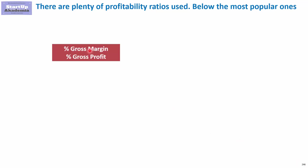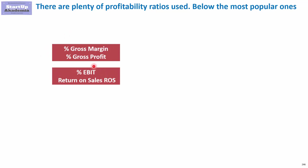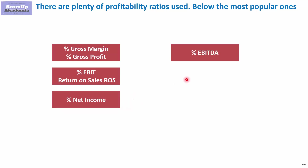The most popular is obviously the gross profit margin, which shows you how profitable you are after you deduct the cost of goods sold. Then we have a slightly more advanced level — the operational profit. This is usually called either percentage EBIT or return on sales. We can also have the net income expressed as a percentage of sales, and in the same way we can treat the EBITDA by relating it to sales to see how profitable we are.